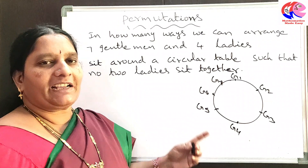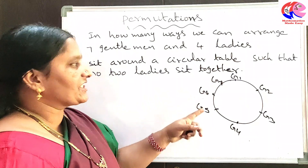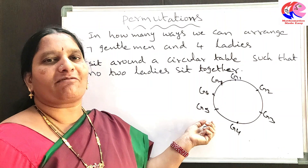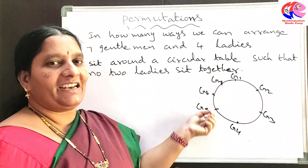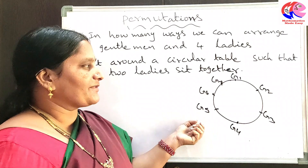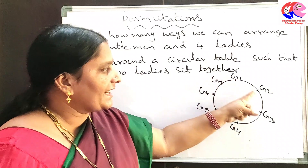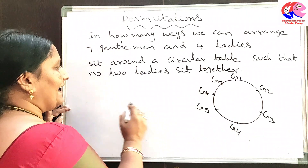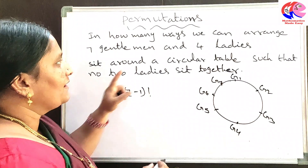Whenever we are arranging living things around a circular table, the formula for finding the number of circular permutations is equal to (n − 1) factorial. So we can arrange these 7 gentlemen around a circular table in (7 − 1)! ways.